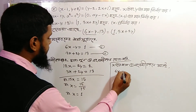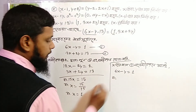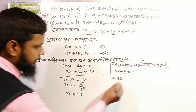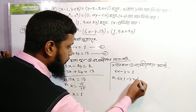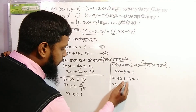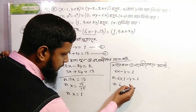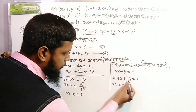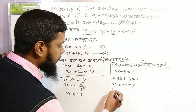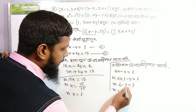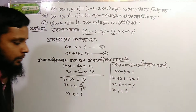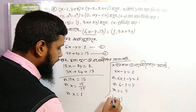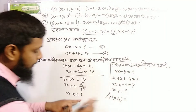6x minus y equals 1. Substituting x equals 1: 6 into 1 minus y equals 1. So 6 minus y equals 1. This gives 2x minus y equals 5, and x minus y equals 1.